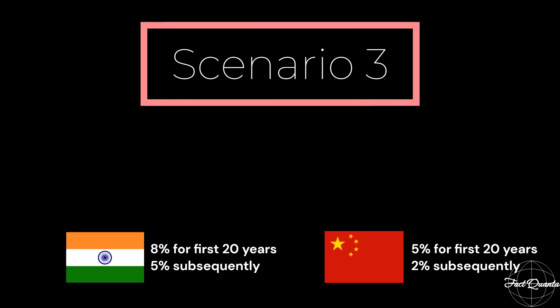In the final scenario, we adopt a more realistic approach by assuming that India's growth rate remains fixed at 8% for the first 20 years, and then decreases to 5% for the subsequent years. Similarly, for China, the growth rate starts at 5% for the first 20 years and gradually declines to 2% thereafter. This model reflects the tendency for a country's growth rate to slow down as it reaches a developed stage.